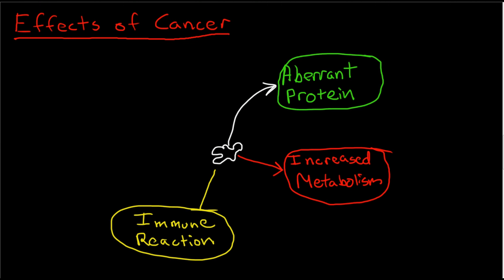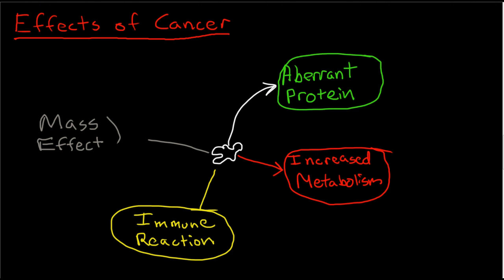The fourth factor occurs as the tumor grows over time, and this would be the mass effects. This may be from the growth of the tumor itself, or it could be due to fluids that are secreted by the tumor or bleeding that occurs around the tumor.